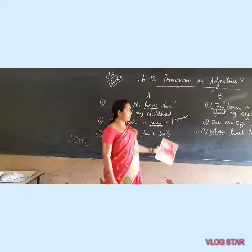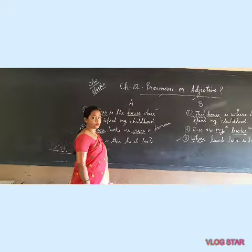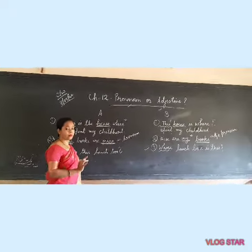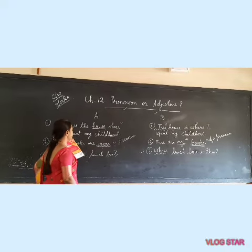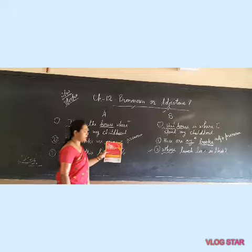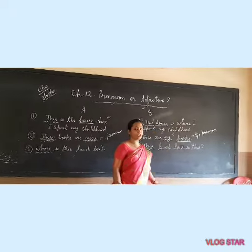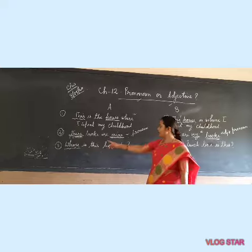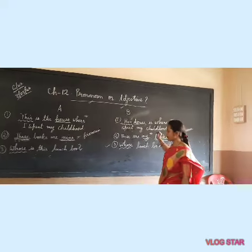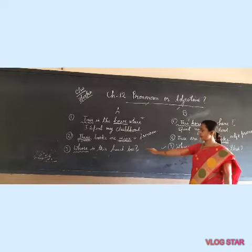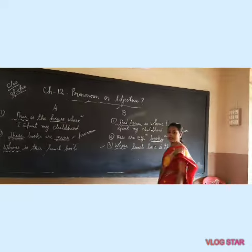So here I have written a set of two sentences — a column of two sentences — to make a clear difference. Number one: 'This is the house where I spent my childhood.' 'This house is where I spent my childhood.' Number two: 'These books are mine.' 'These are my books.' And: 'Whose is this lunchbox?' 'Whose lunchbox is this?'